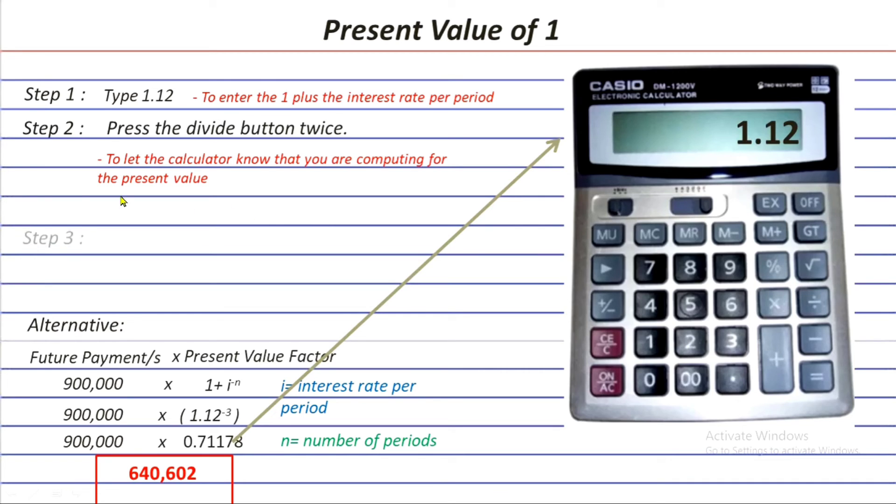Now, let's go to the last step, which is press the equals button three times. Because, in our example, we have three years or three periods. Simply stated, we are doing this last step to enter the n or the number of periods.